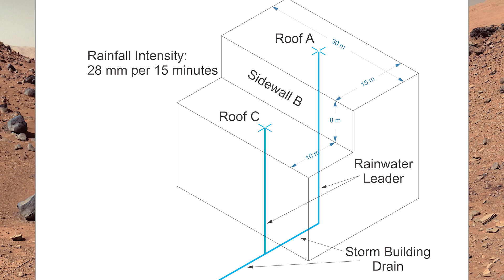For example three, we're going to take the exact same building and put an addition off to the side. We're going to divide this up into three areas: Roof A, Sidewall B, and Roof C.